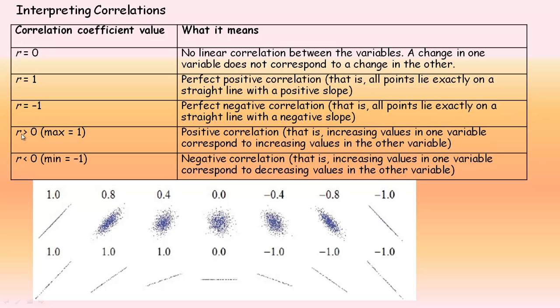If r is greater than zero, if it's a positive value—again the max is 1—there is some positive correlation. Depending on how close you are to 1, the better the fit. If r is below zero, there's a negative correlation. If it's negative 0.7, negative 0.8, negative 0.9, that's called a negative correlation.